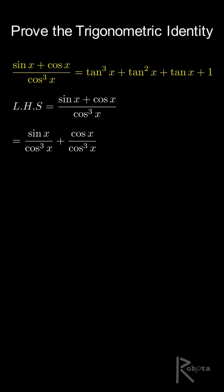Now simplify each term. The first becomes tan x times 1 divided by cosine squared x. The second becomes 1 times 1 divided by cosine squared x.